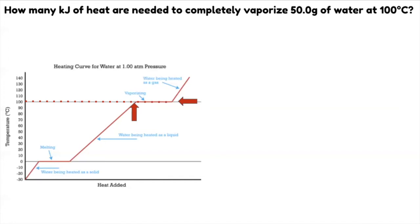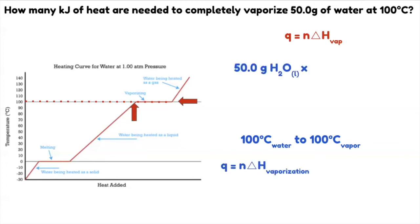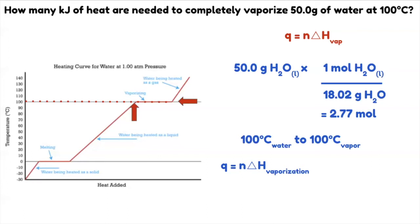It will be molar heat of vaporization because you're vaporizing. Molar heat of fusion is for melting. So Q equals N times the molar heat of vaporization. Let's solve first for the moles of water. The step is 100 degrees water to 100 degrees vapor. So: 50 grams of water times 1 mole over 18.02 grams of H₂O. Cancel the grams — you will get 2.77 moles.